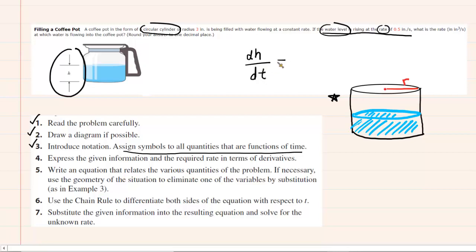In symbolic form, the rate of change in the height per unit time would be dh/dt. So in essence, dh/dt is what equals the 0.5 inches per second. So that's going to be very important here.